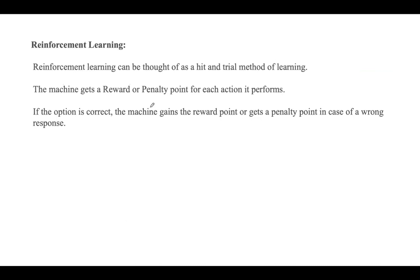Reinforcement learning is a feedback-based machine learning technique in which an agent learns to behave in an environment by performing actions and seeing the results of those actions. It can be thought of as a hit-and-trial method of learning. For each good action the agent gets positive feedback, and for each bad action it gets negative feedback or a penalty. The agent learns automatically using feedback without any labeled data, unlike supervised learning.